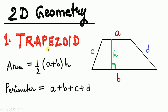The first shape is the trapezoid. It has two parallel sides, a and b, with the other two sides c and d, and a vertical height h. The area formula is: area = ½ × (a + b) × h — half the sum of the parallel sides multiplied by the height. The perimeter is the sum of all sides: a + b + c + d.